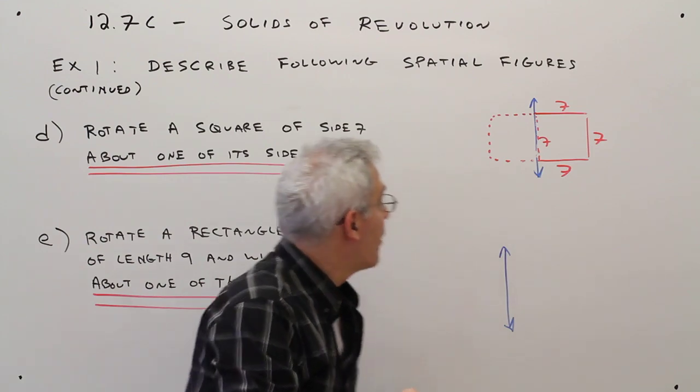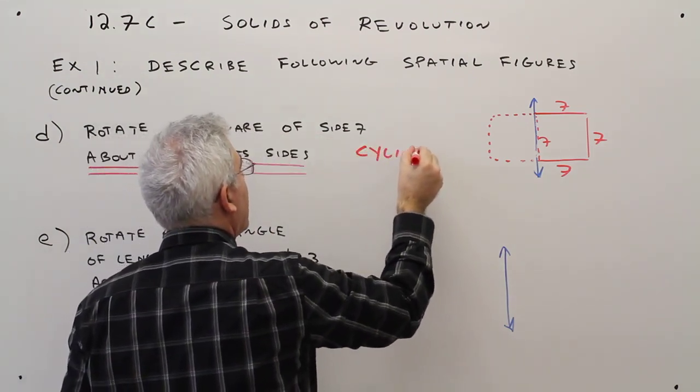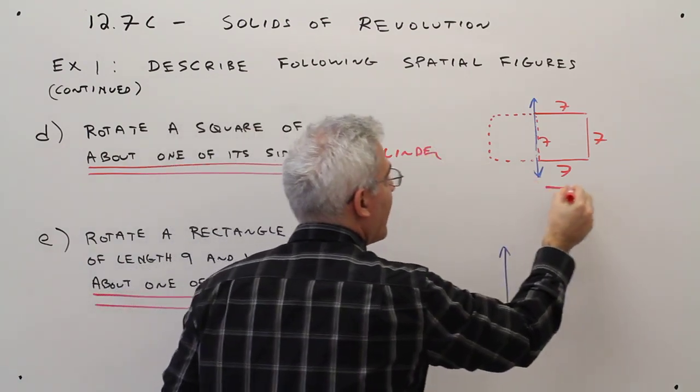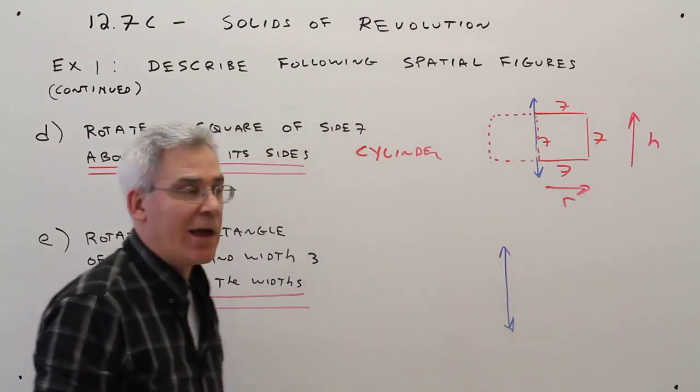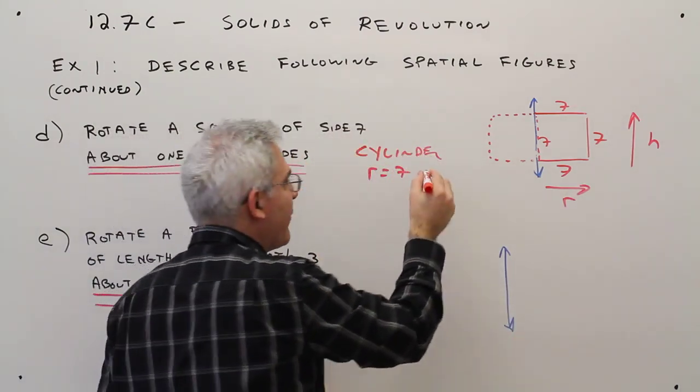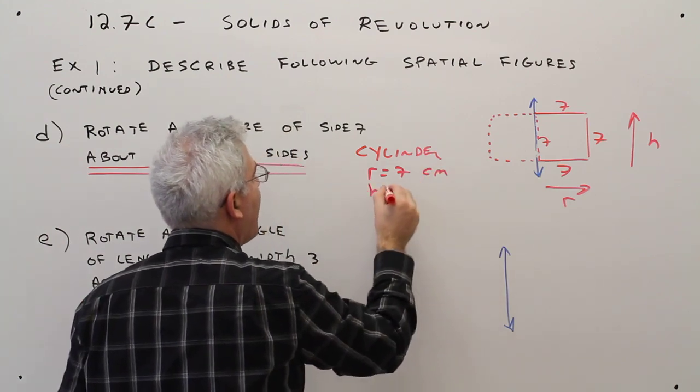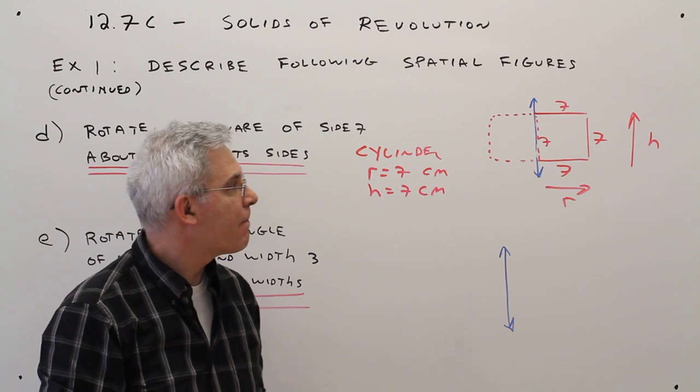Okay. So I'm going to say it's a cylinder. Here, this is my radius, and that is my height. So the radius is 7, I'll just call it 7 centimeters. And the height is 7 centimeters, or units.